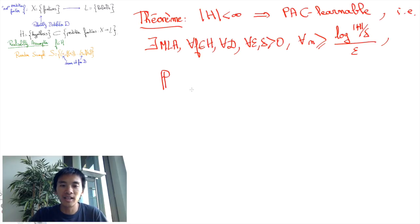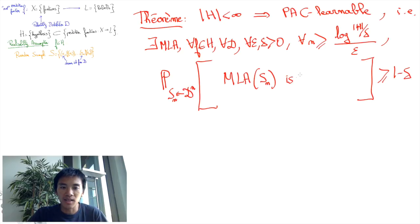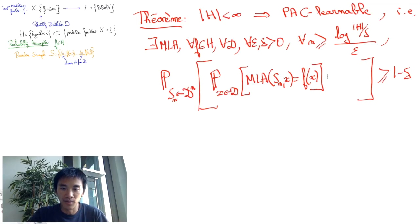with probability at least 1 minus delta for sample sets Sn of size n, the prediction function computed by the machine learning algorithm with sample set Sn is epsilon approximately correct. That is, the probability that the machine learning algorithm applied to the sample set Sn and to the feature x is predicting the right label f of x for a random feature x drawn from probability distribution D. The probability that this prediction is the right prediction is at least 1 minus epsilon.